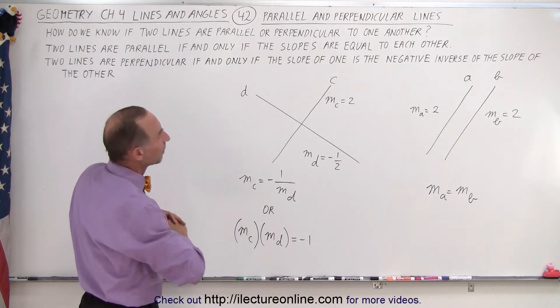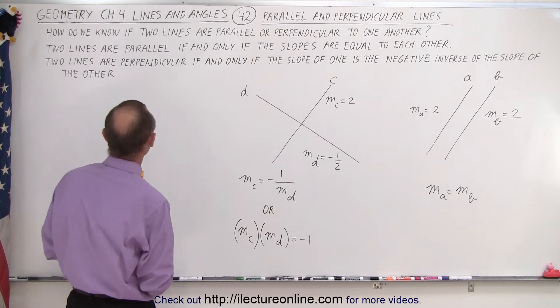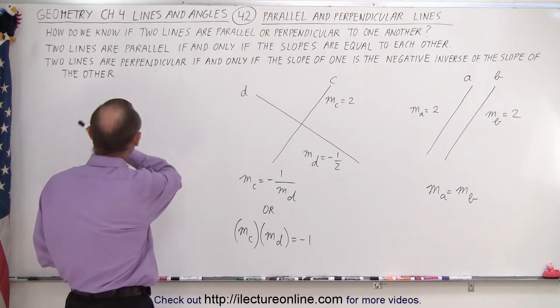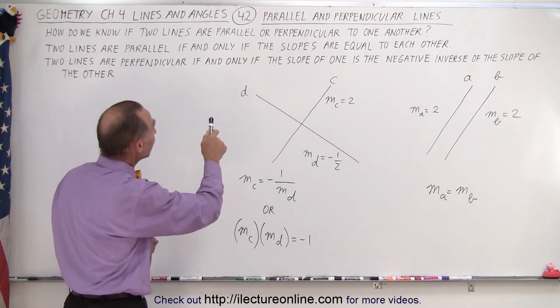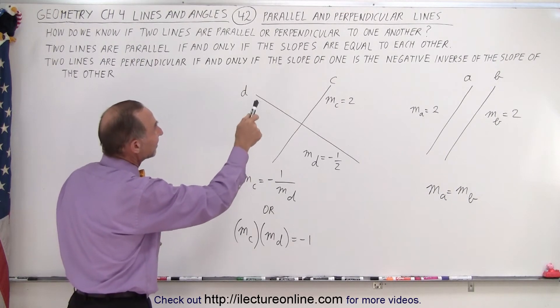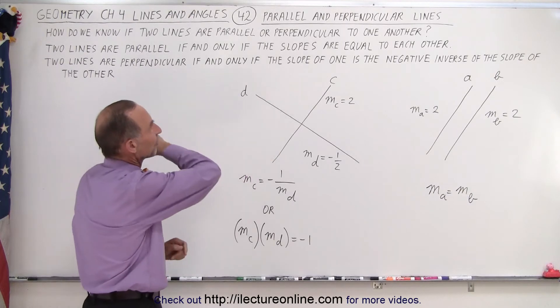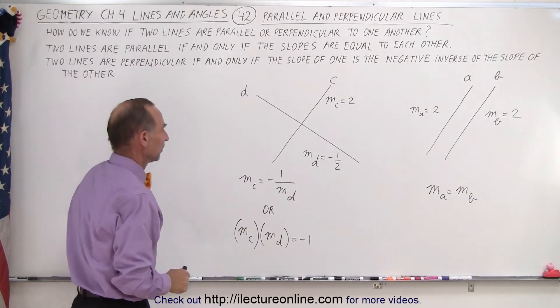Wait — let me correct that. Two lines are perpendicular if and only if the slope of one is the negative inverse of the slope of the other.